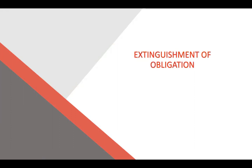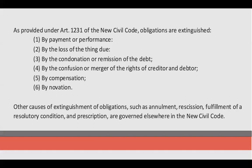Extinguishment of Obligation. As provided under Article 1231 of the new Civil Code, the following are modes of extinguishing the obligation: We have payment or performance, loss of the thing due, condonation, confusion or merger, compensation, or novation.